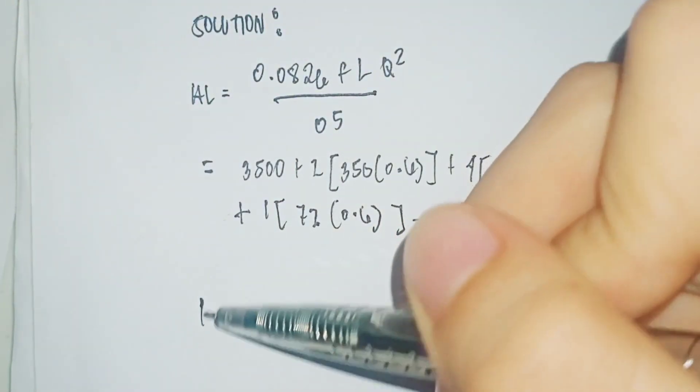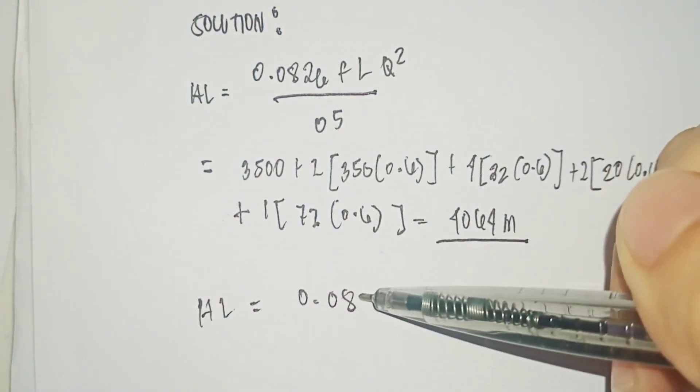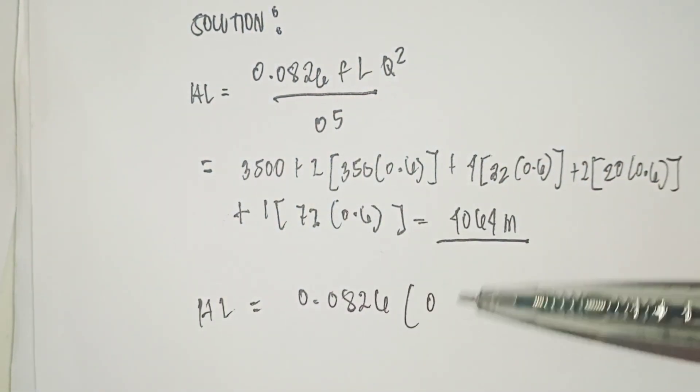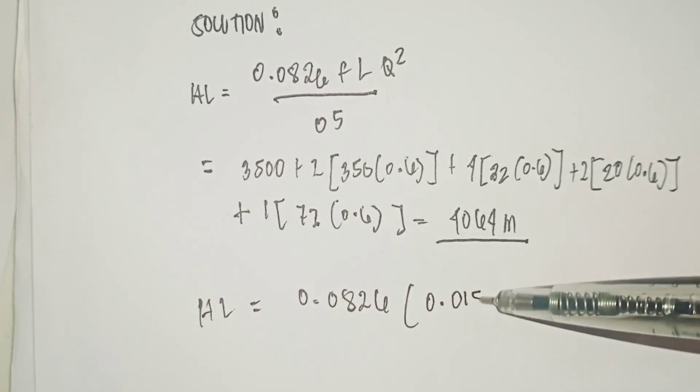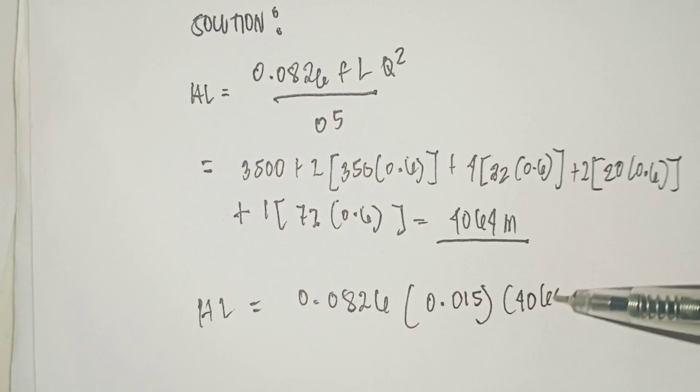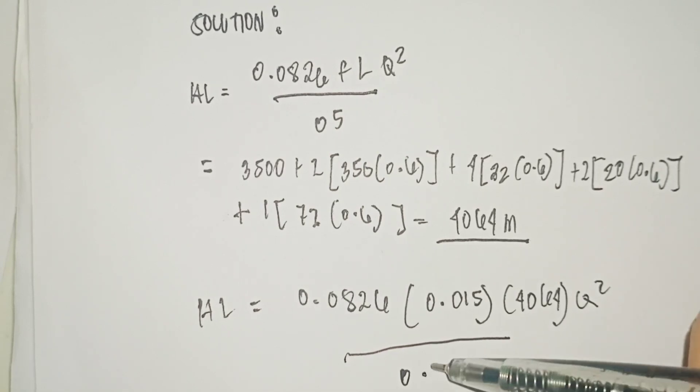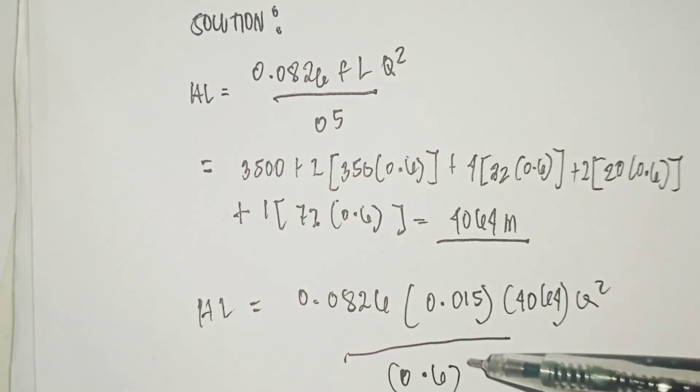Head loss equals 0.0826 times 0.015 times 4064 times Q squared all over 0.6 raised to 5.